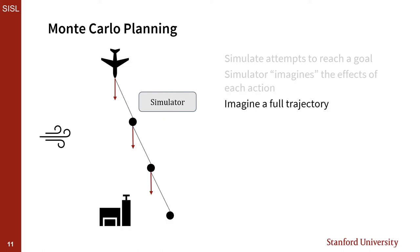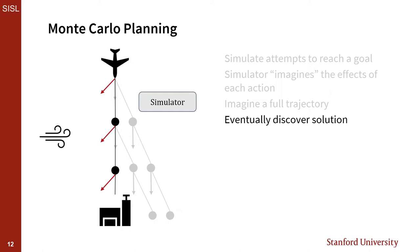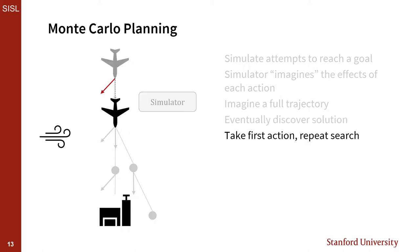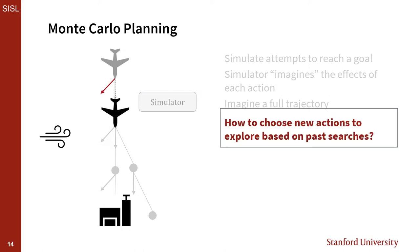During a Monte Carlo planning process, we simulate a full trajectory to some endpoint, repeating this over and over until we discover a solution that reaches or nearly reaches our goal. Once we have a successful trajectory, we take the first step and repeat the entire search process for the next action. An important question in designing efficient Monte Carlo search is: how do we decide what actions to try from the states we encounter? What's the best way to explore our action space?